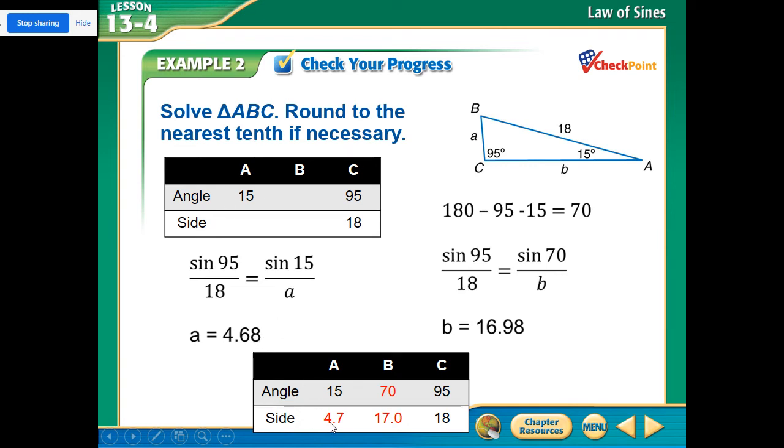It says round to the nearest tenth, so I said 4.7. The other angle, if I have two of them to find it, I just subtract and I get 70. Subtract from 180. And now again I go back to that pair that I have and the sine of 70 and cross multiply. I get 16.97 or 17.0.